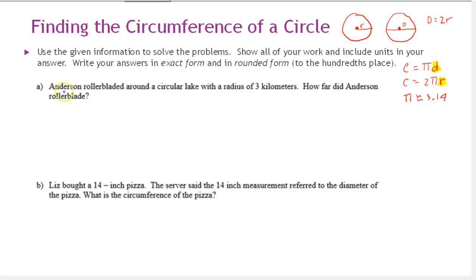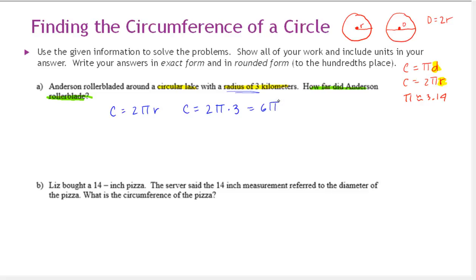The first question: Anderson rollerbladed around a circular lake with a radius of 3 kilometers. How far did Anderson rollerblade? Since we're given the radius, we use C = 2πr. We replace r with 3 kilometers: C = 2π × 3. Multiplying 2 and 3 gives 6, so C = 6π kilometers. This is our exact form.